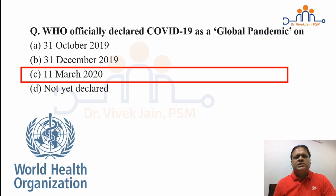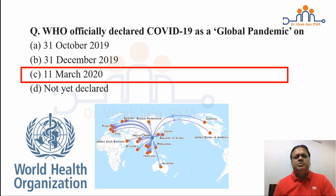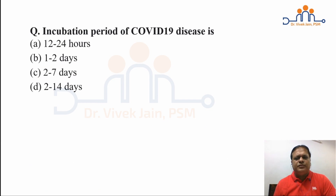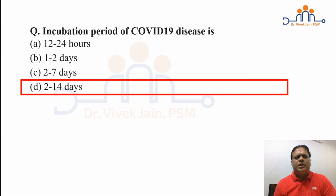Since its appearance, this global pandemic has reached 213 countries with close to 5 million people affected and 0.3 million deaths. The incubation period of COVID-19 is the time between entry of the organism into the human body until appearance of the first sign or symptom. It is quite variable, lying between 2 to 14 days globally. Based on Ministry of Health and Family Welfare studies in India, it was found to be 1 to 12.5 days, with a median of 5 to 6 days.